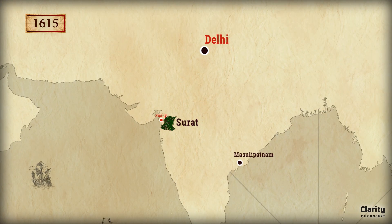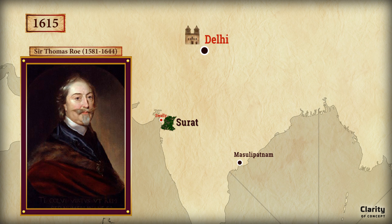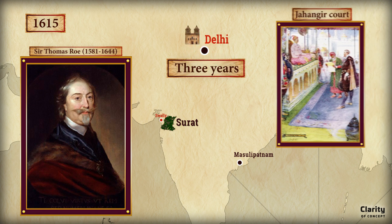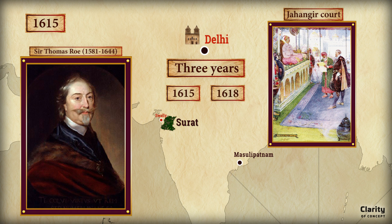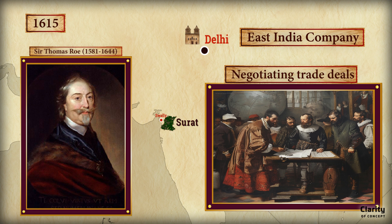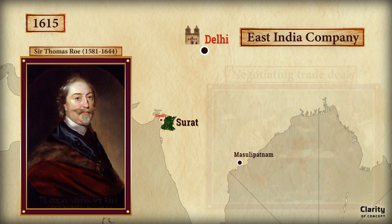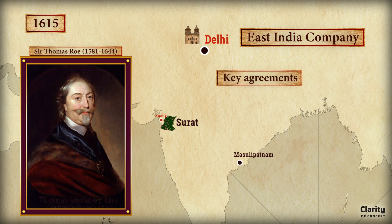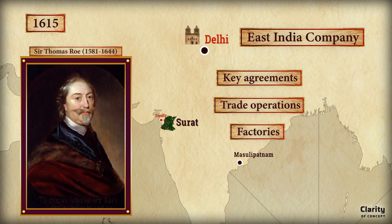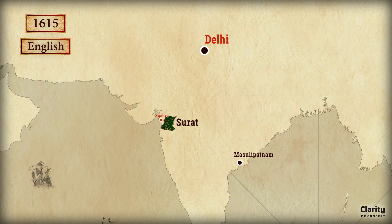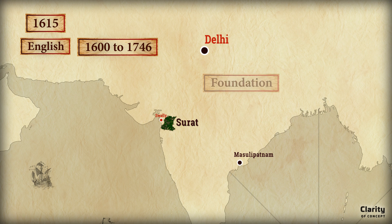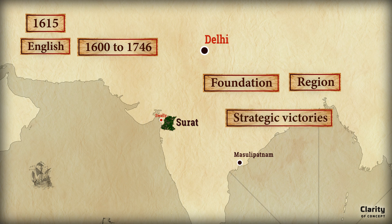Following this success, in 1615 the English sent Sir Thomas Roe as an ambassador to the Mughal court. Roe spent three years, from 1615 to 1618, negotiating trade deals for the East India Company. His diplomatic mission was highly successful — he secured key agreements allowing the English to expand trade operations and establish more factories without significant Mughal interference. After completing his mission, Roe returned to England, having laid the groundwork for the company's growth in India.